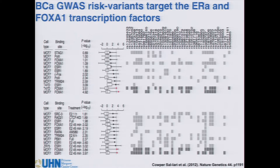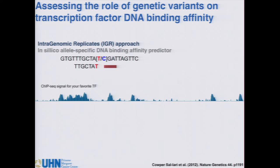We ran VSE against ChIP-seq tracks from a large collection of transcription factors profiled in breast cancer cells, and the key finding was significant enrichment of breast cancer risk loci within binding sites for the estrogen receptor and the pioneer factor FOXA1 — two well-established drivers of growth in breast cancer. This is a correlation showing significant enrichment of SNPs within binding sites for these factors, but we still need functional validation. Many have used PWM scores to assess whether a SNP affects a motif, but PWM has significant caveats in measuring binding affinity.